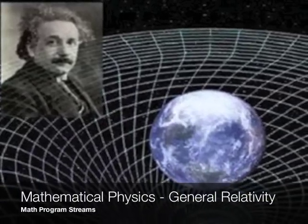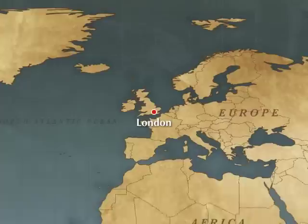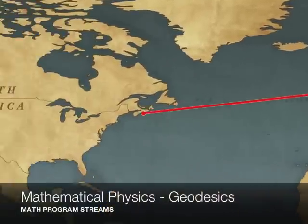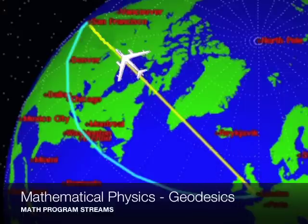General relativity explores the geometry of curved space-time. Geodesics is the study of the shortest paths on a surface. To save fuel and time, a plane's path follows a geodesic along the two-dimensional surface of the earth.